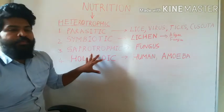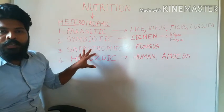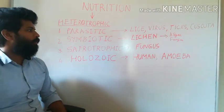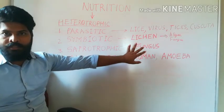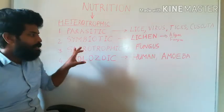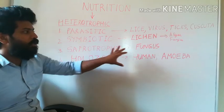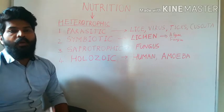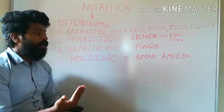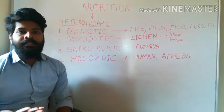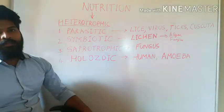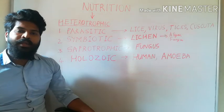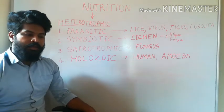The third type of heterotrophic nutrition is called saprotrophic nutrition. An example is fungus. In saprotrophic mode of nutrition, the fungus obtains organic material from outside — in this case from dead plants and animals. You can see mushrooms growing in moist soil from dead leaves and so on.